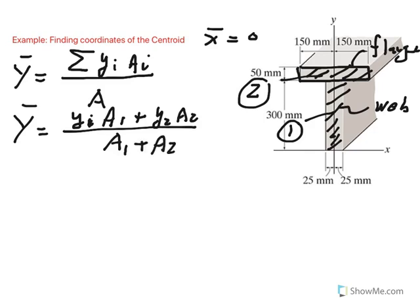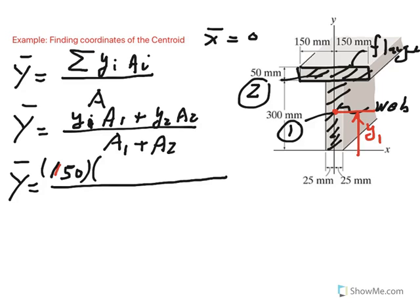Let me show you how we do this. Let's go ahead and figure out y-i. y-1 here is the location of the centroid of the web relative to the reference, so that would be this distance. That would be, as you could see, 300 divided by 2, so 150 times the area, but the area of the web is 50 by 300.